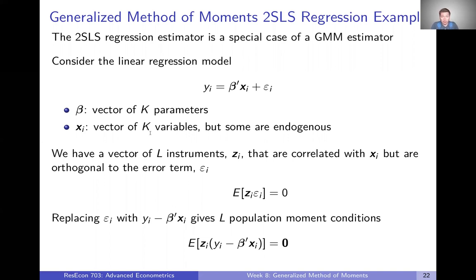So if these instruments are orthogonal to the error term, then we can write down that in expectation, any one of these instruments or every one of these instruments times epsilon equals zero in expectation. And we have L of these instruments. So we can think of having L moment conditions here. Every one of our instrumental variables multiplied by epsilon equals zero in expectation. We can replace epsilon with Y minus the linear combination of beta and X.